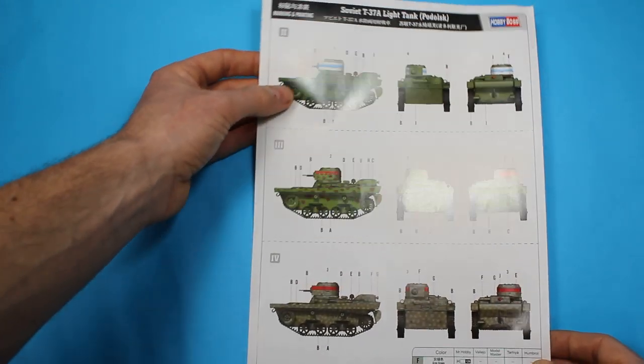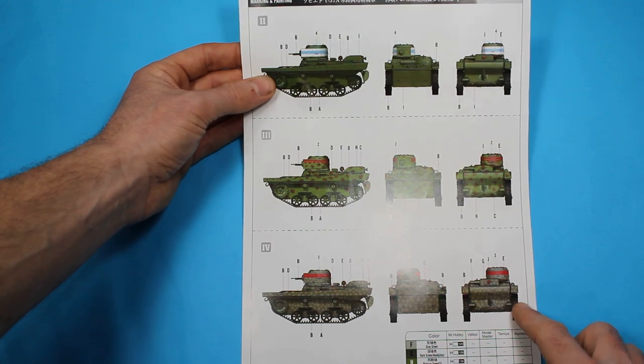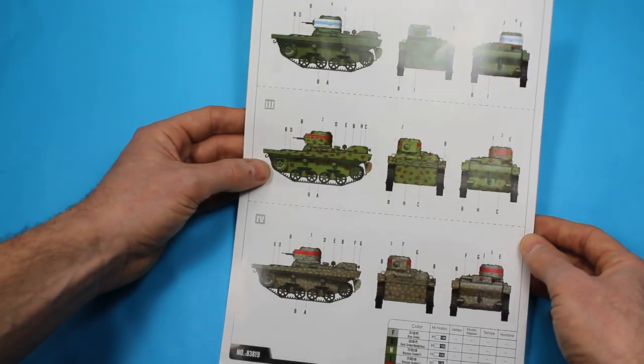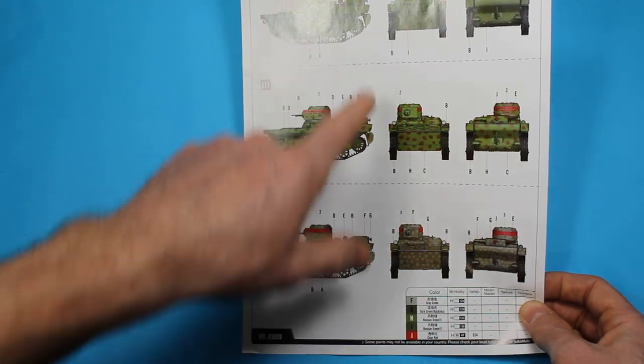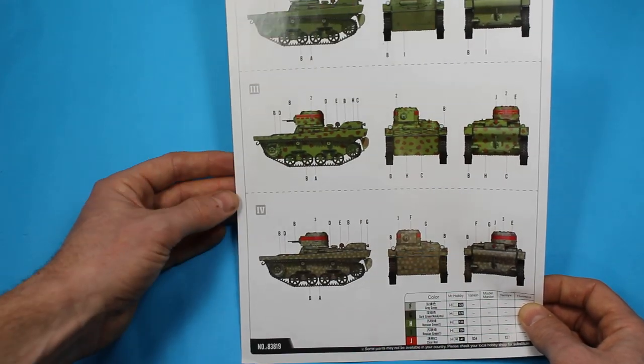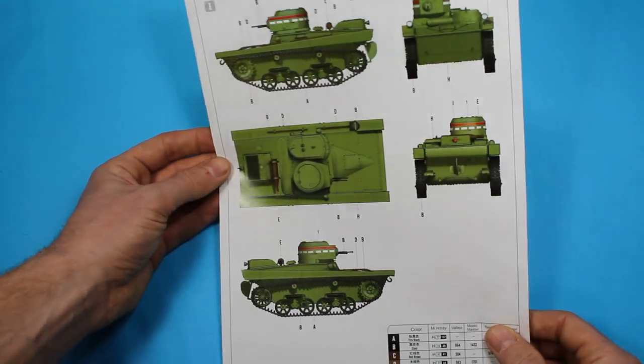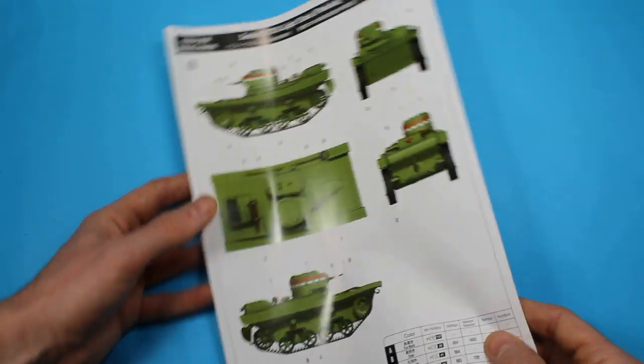Then we've got a Finnish one, which is a captured version from the Winter War. There are also camouflage versions which look very different, but these are both Soviet as well. So a lot of options there to give some diversity, not just green overall.